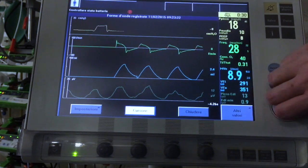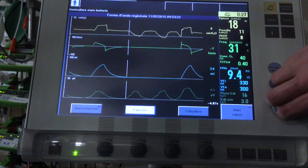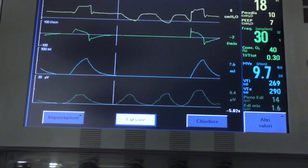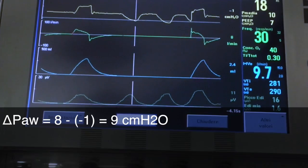We go back and take the airway pressure value at the beginning of an effort and add the minimum value, from which we obtain the total pressure swing, 9 cm of water in this case.